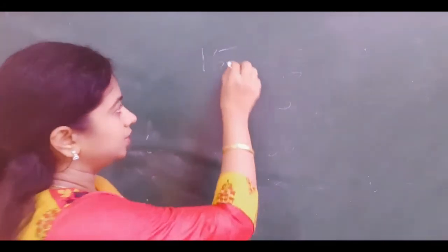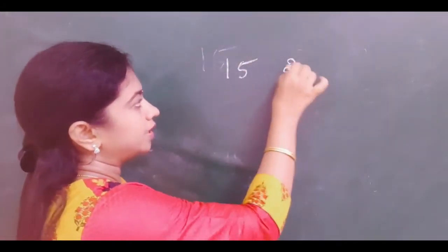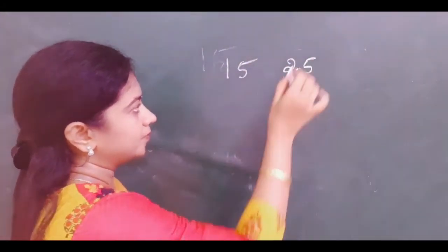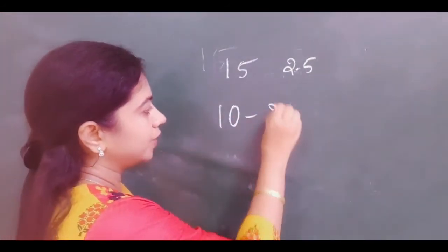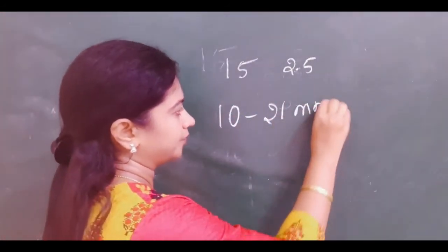Normal IOP is usually 15 with two standard deviations of 2.5, which comes to around 10 to 21 millimeters of mercury.